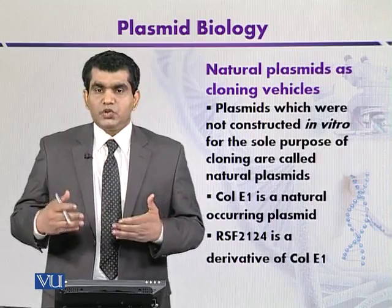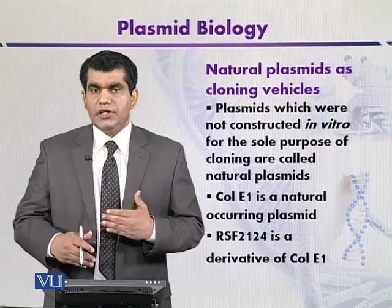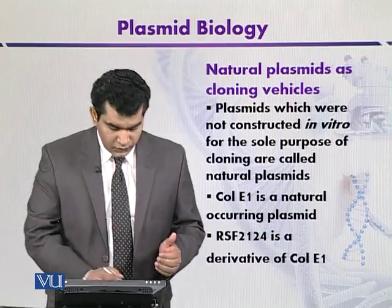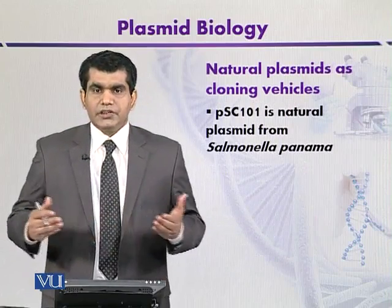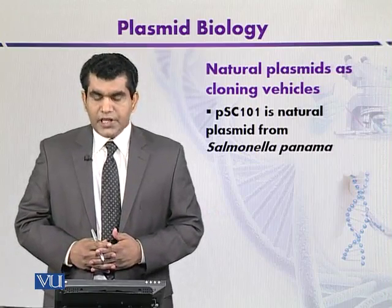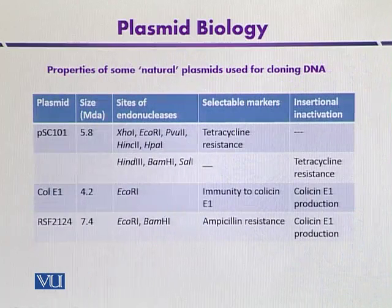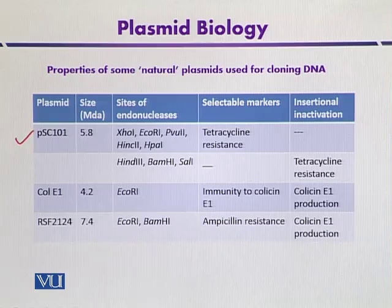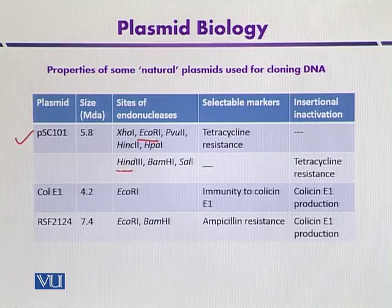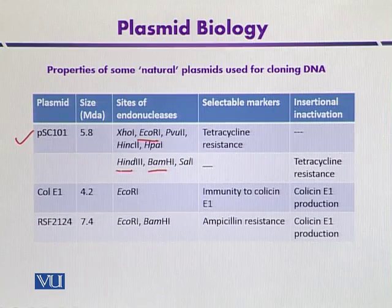A transposon is a segment of DNA that can mediate its insertion into the genome. PSC-101 is a natural plasmid that is very famous and is mainly harbored by Salmonella strains. This table indicates the properties of some natural plasmids used for cloning DNA. PSC-101 contains single sites for different types of restriction endonucleases, including EcoRI and BamHI. The selectable marker for PSC-101 is tetracycline resistance.